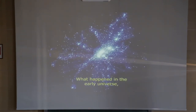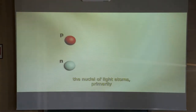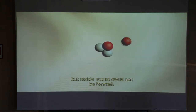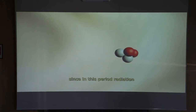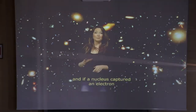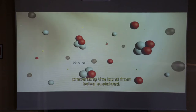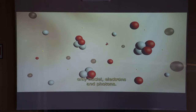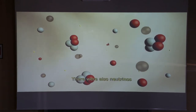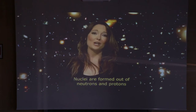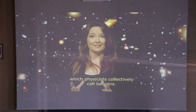What happened in the early universe? Minutes after the Big Bang, atomic nuclei formed - fundamentally hydrogen and some isotopes like deuterium and tritium - but they were unable to form atoms, because in this epoch radiation dominated over matter. If a nucleus captured an electron to form an atom, an energetic photon would immediately interact and prevent the bond from remaining. Matter was completely ionized, forming a dense plasma with no atoms - only nuclei, electrons, photons, neutrinos moving at nearly the speed of light, and dark matter, whose nature we still do not fully know.